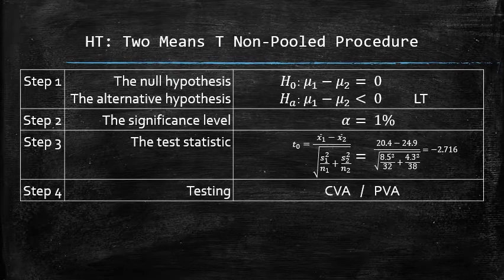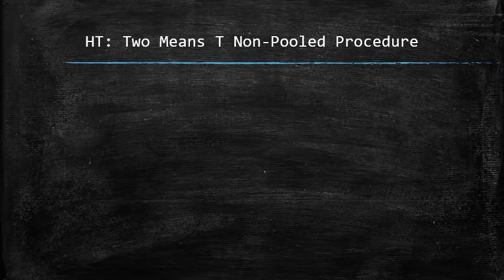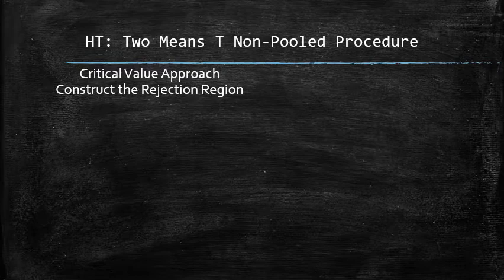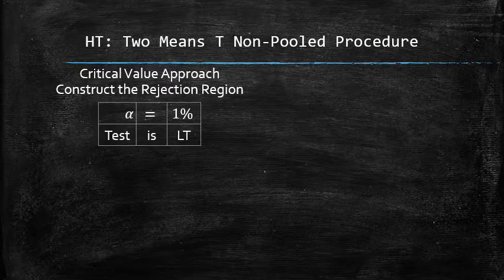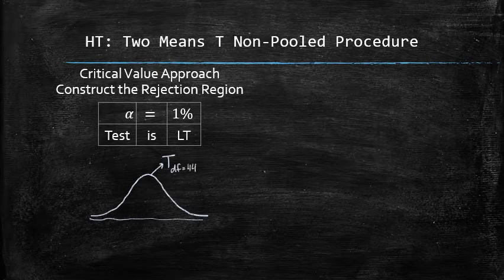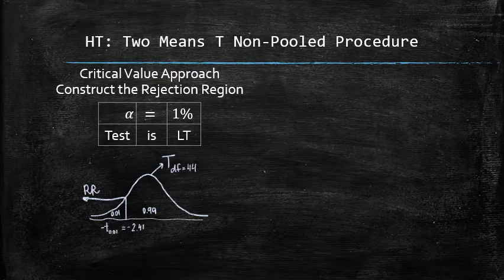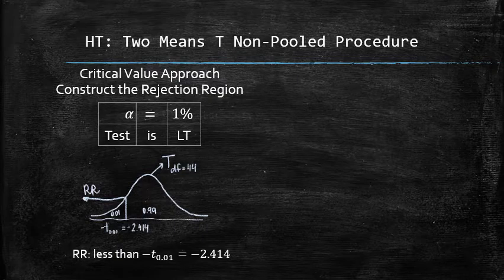Next, we will test the hypothesis using two different approaches: the critical value and the p-value. In the critical value approach, we construct the rejection region, using the significance level alpha and the type of test. We draw the rejection region under the t-curve with 44 degrees of freedom. Since this is a left-tail test, the rejection region is in the left tail with area equal to 1%. The critical value is negative t0.01, which equals negative 2.414. The entire rejection region is all values to the left of negative 2.414.